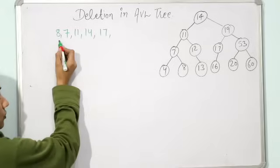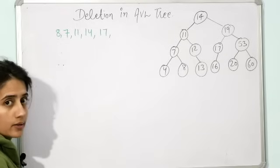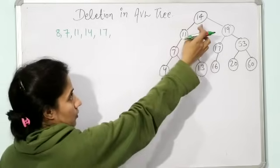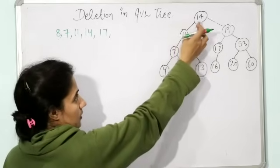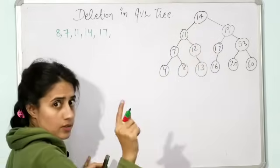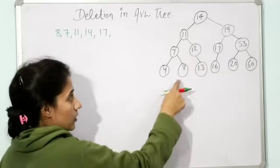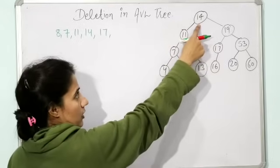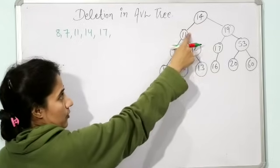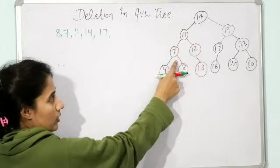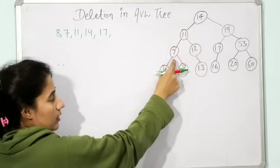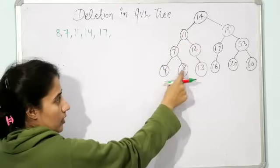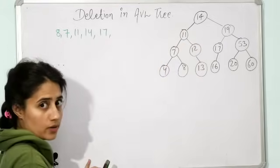Now suppose first of all you want to delete 8. Find out where 8 is. This AVL tree is first of all a BST. Compare with the root: 8 is less than 14, go to the left part. 8 is less than 11, go to the left part. Here is 7. 8 is greater than 7, so here is 8. We have found it.